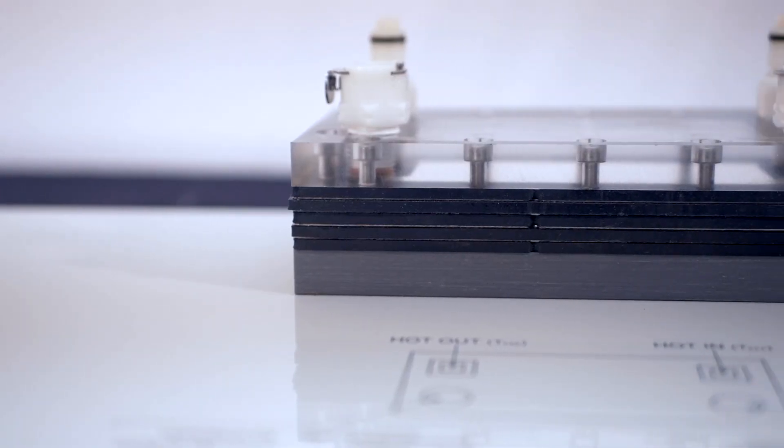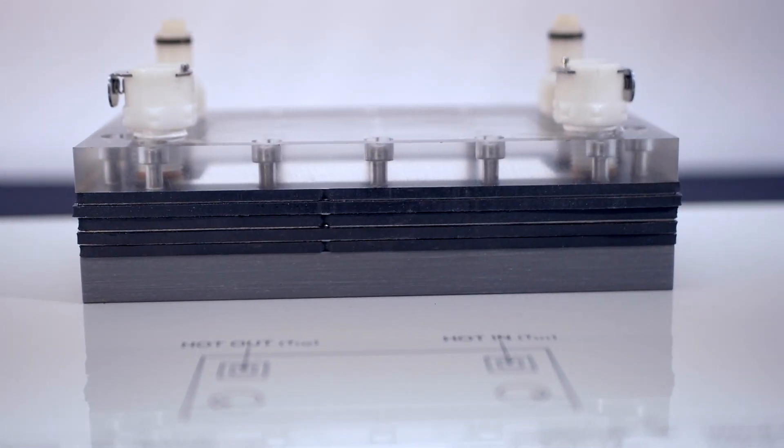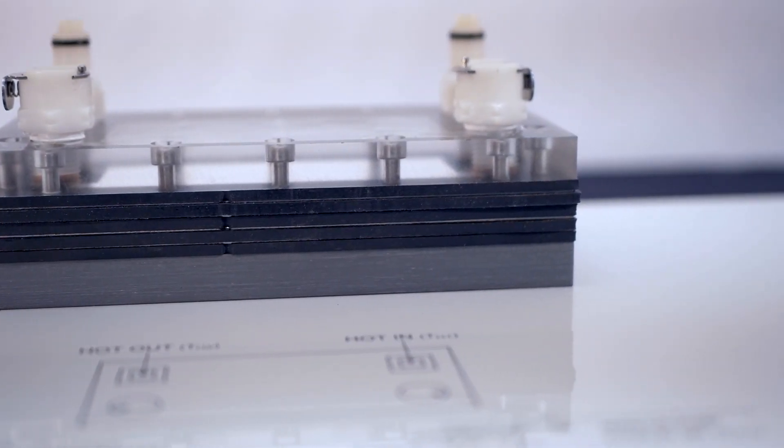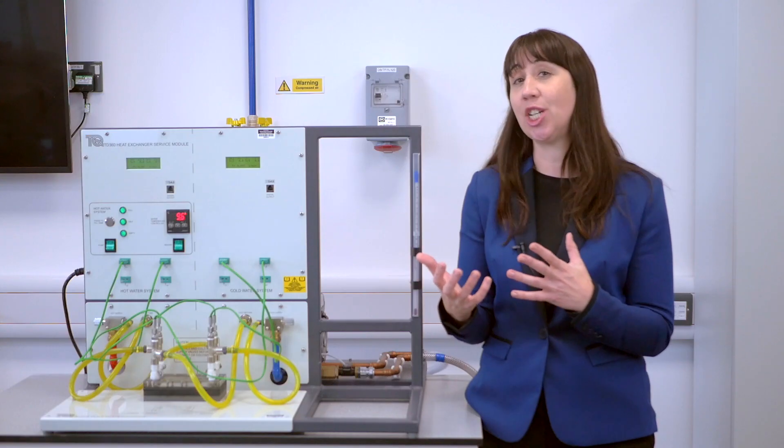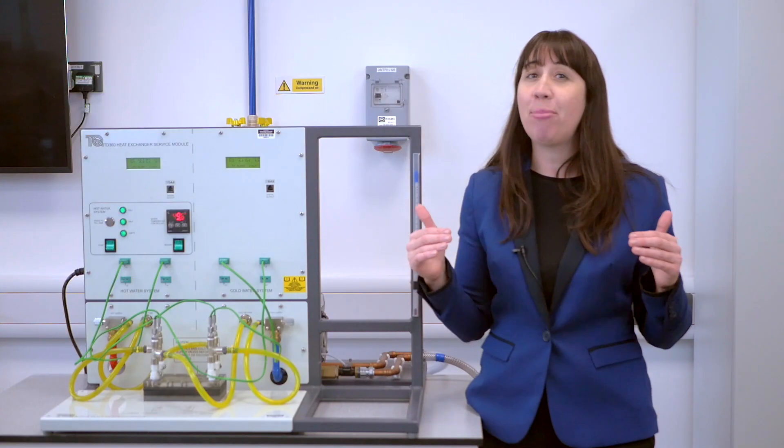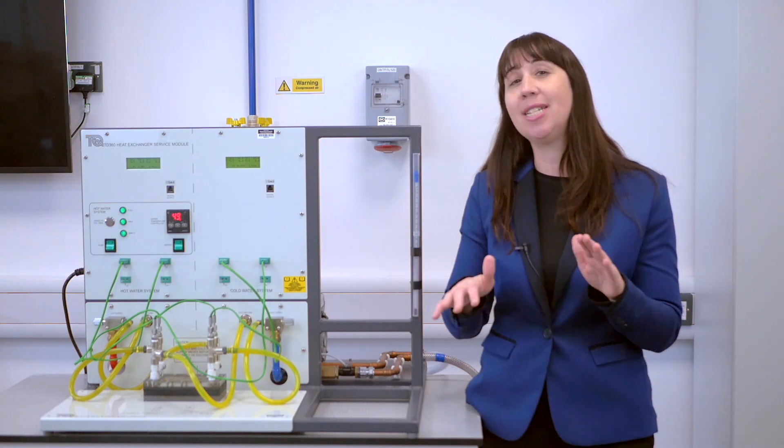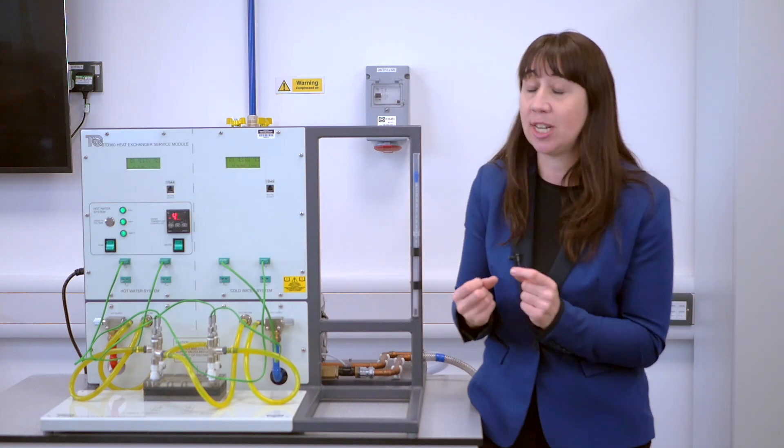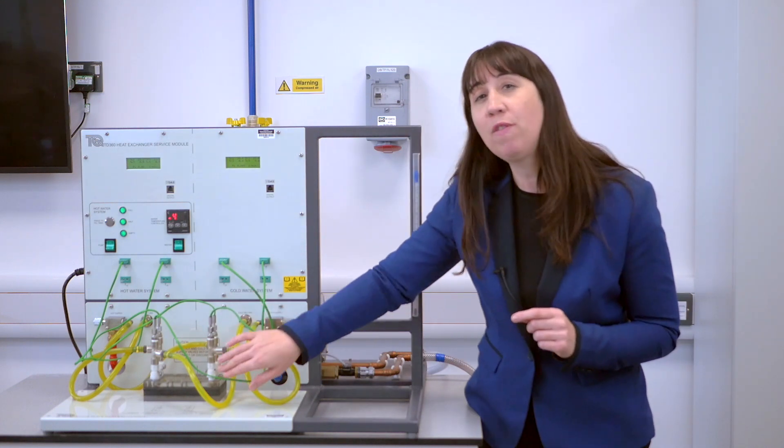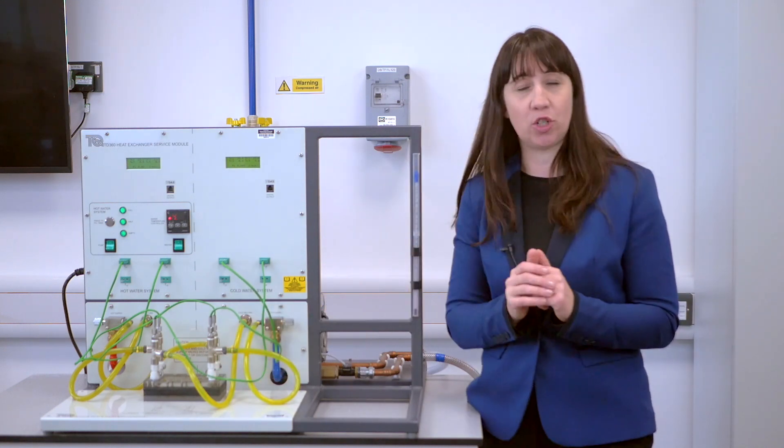Commercial heat exchangers have chevron shapes pressed into the surface of the metal to increase their surface area and disturb the flow for better heat transfer. This particular experiment has small flow disruptors to do a similar job.